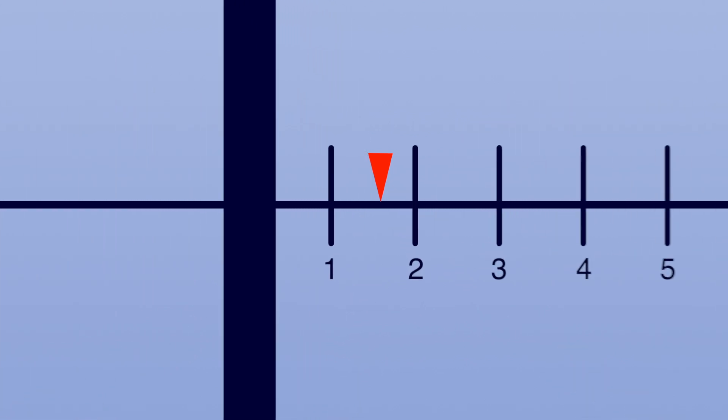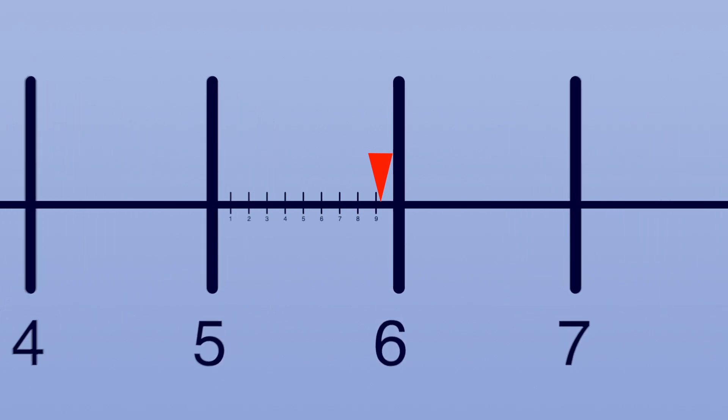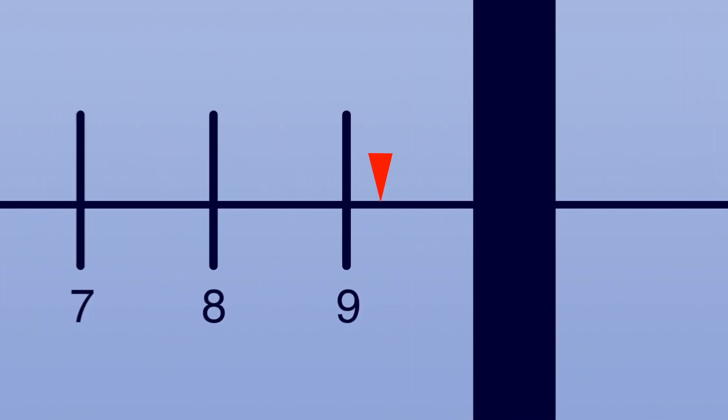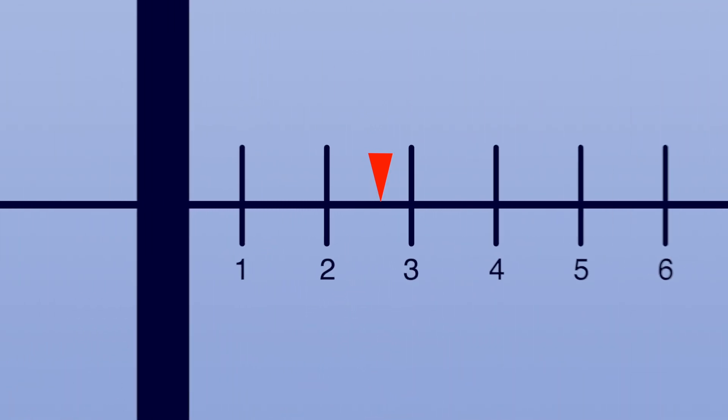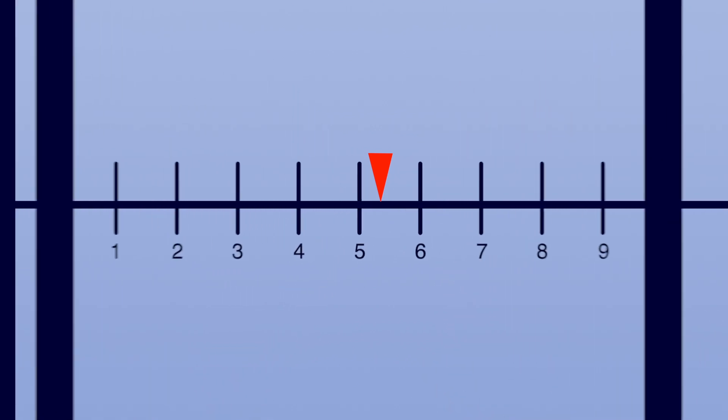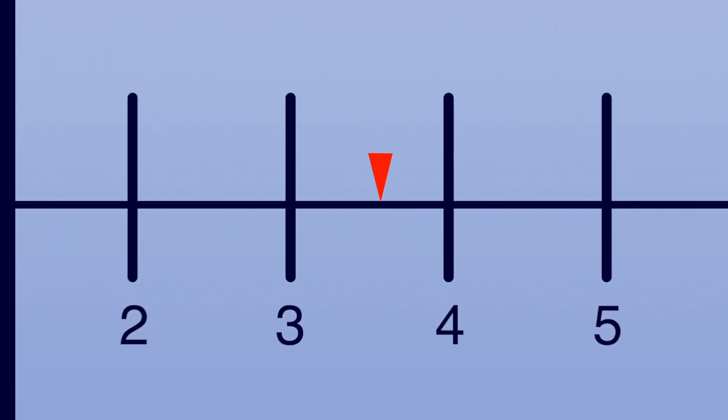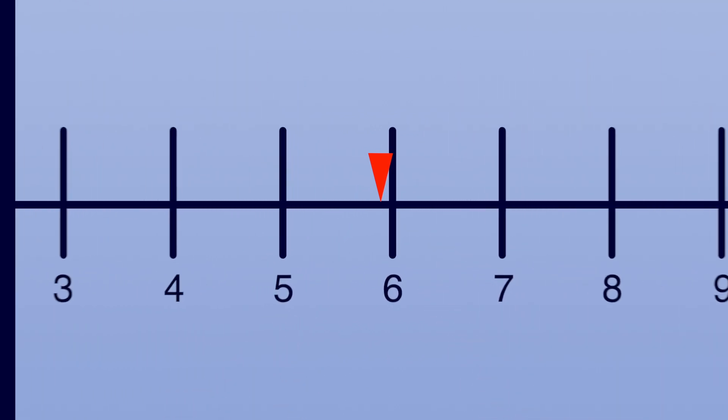It might seem that if we kept zooming in, eventually the value of pi would line up exactly with one of our marks. But it won't. Since pi is an irrational number, even if we could zoom in forever, we would never get to a point where pi exactly lines up with a mark on the number line. It might get really close, but as we keep zooming in we'll see that it doesn't quite line up, and it never will.